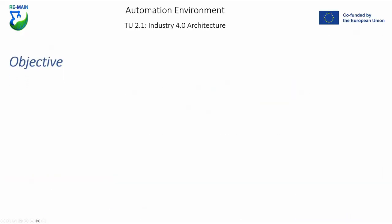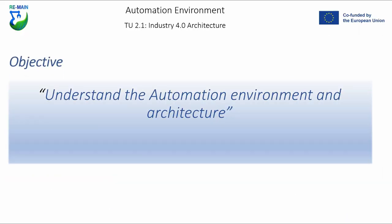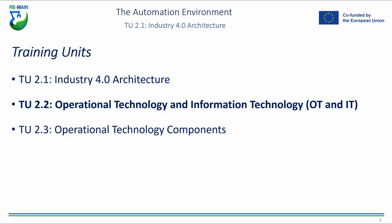The objective here within Training Unit 2 is to understand the automation environment, its architecture, and what operational technology and information technology is. We are looking at Subunit 2.2 today, which is operational technology and information technology — otherwise known as OT and IT. We will dive into what each technology represents, the differences between the two, and how they overlap.